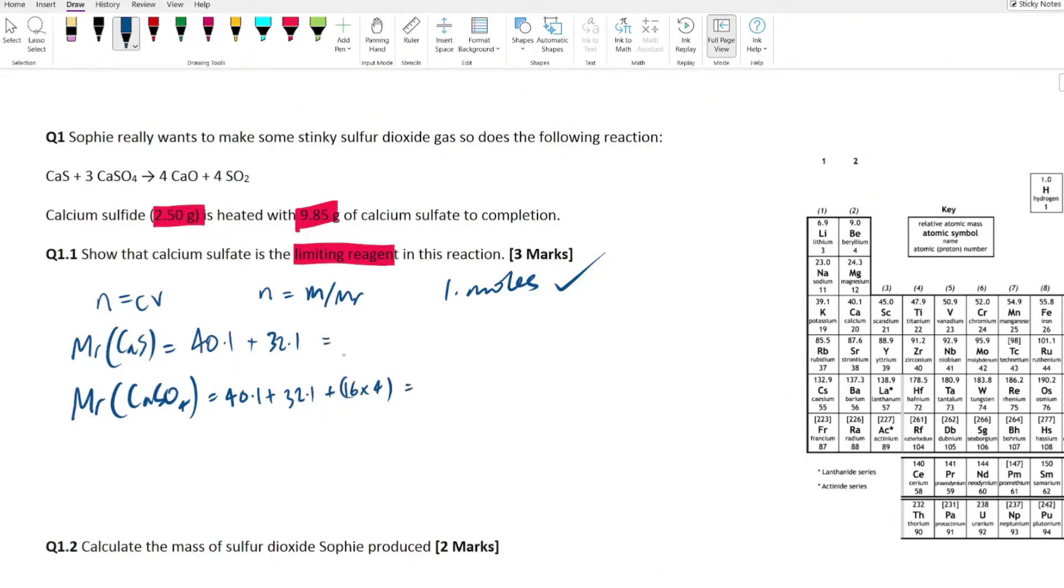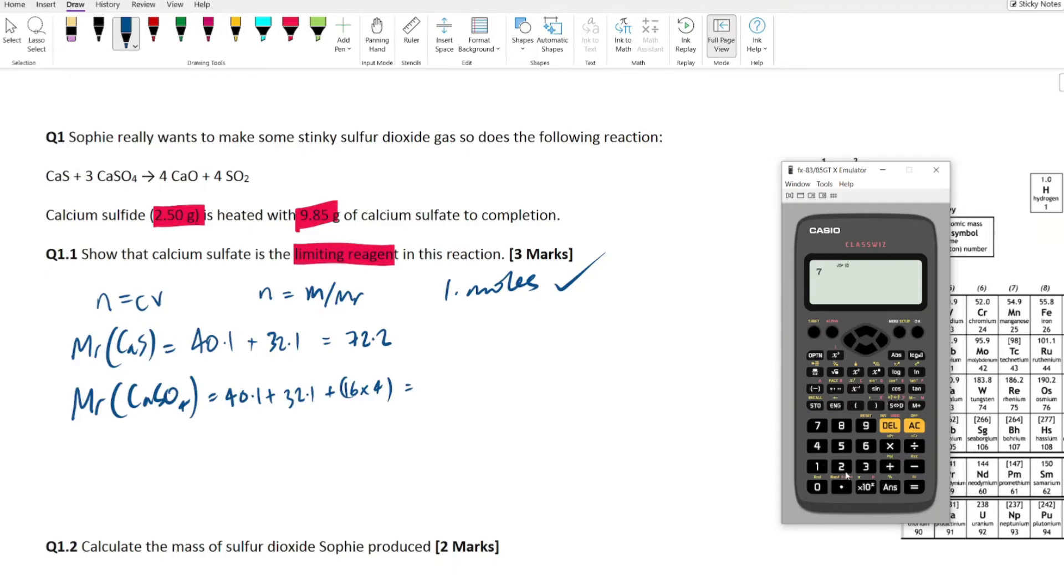All right, so calcium has 40.1 right there and sulfur we go over has 32.1. Calcium sulfate again same thing, 40.1 plus 32.1 but this time we've got four oxygens, 16 times four. Done.